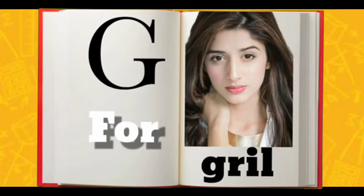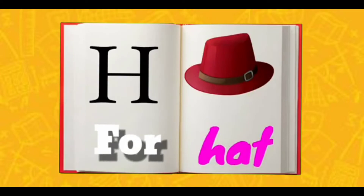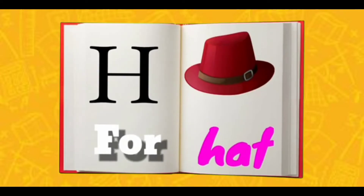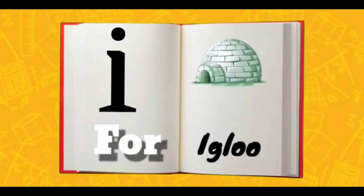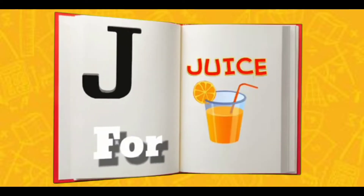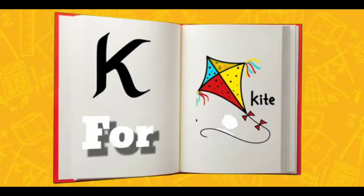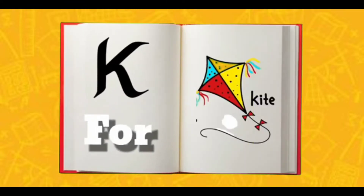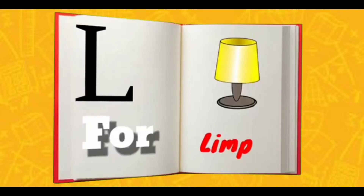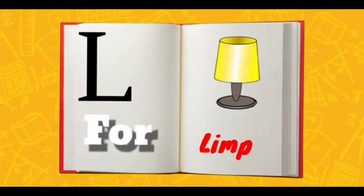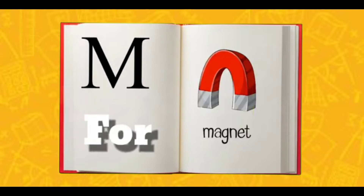G for Girl, H for Head, I for Igloo, J for Juice, K for Kite, L for Lamp.